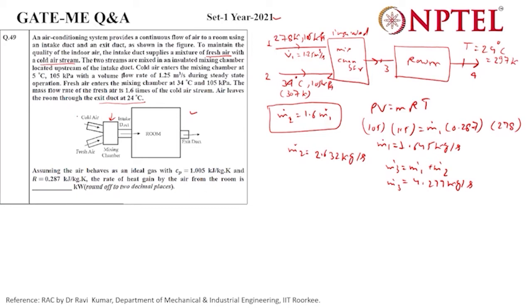We are applying the energy equation to get the temperature at point three. m1 dot cp T1 plus m2 dot cp T2 equals m3 dot cp T3. cp will get cancelled. We know m1 T1, m2 T2, and m3, and from here we can easily get T3.